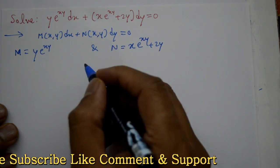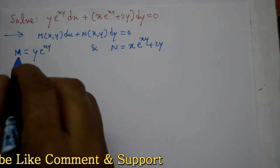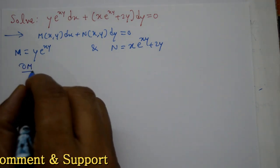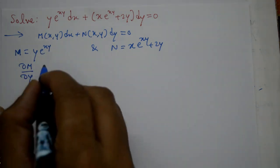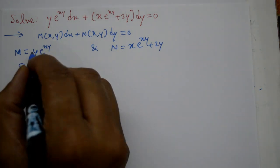So we'll check if it's an exact equation. Now differentiate m with respect to y partially, x treated as a constant. Here we'll use the product rule.